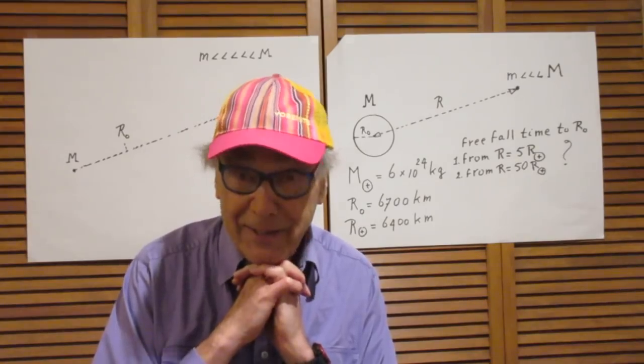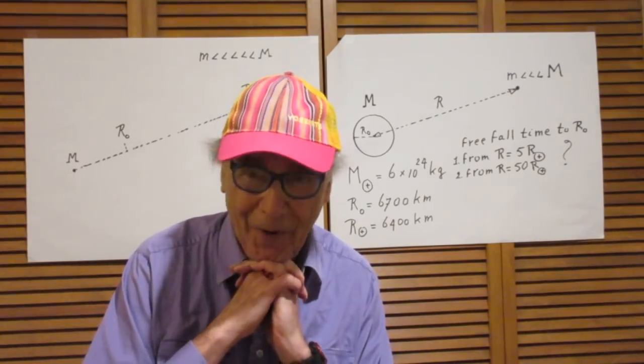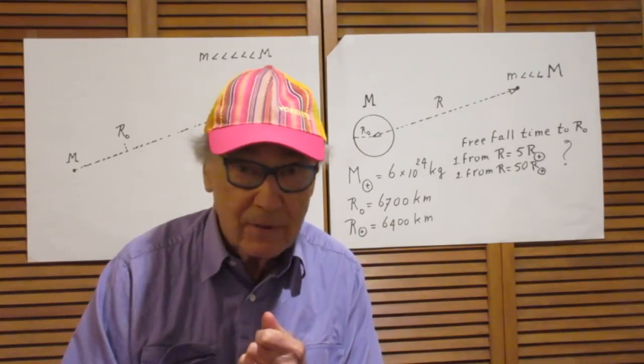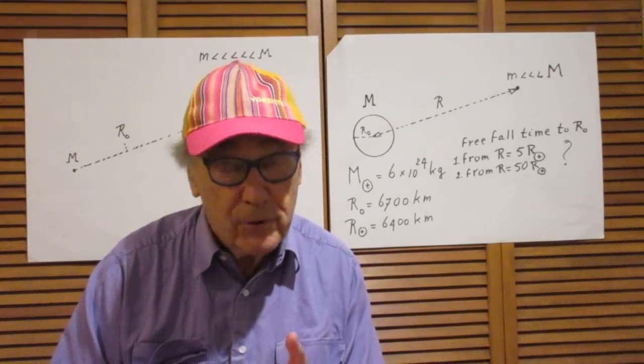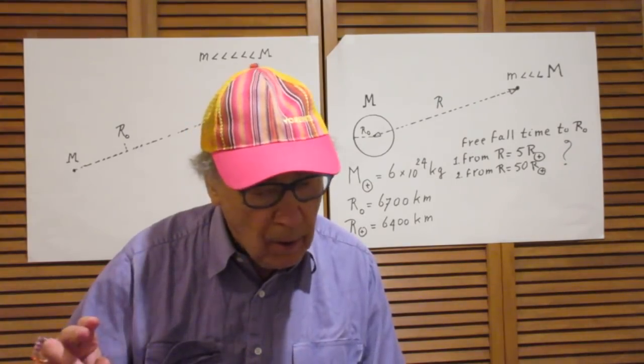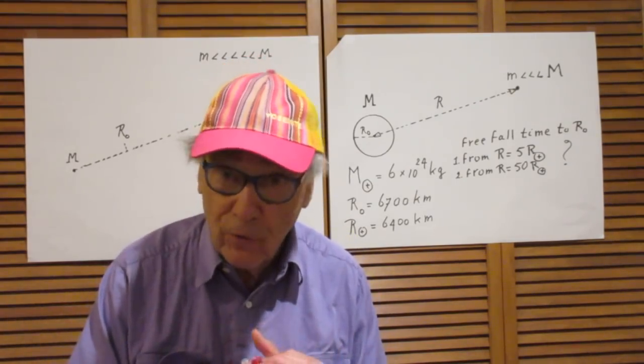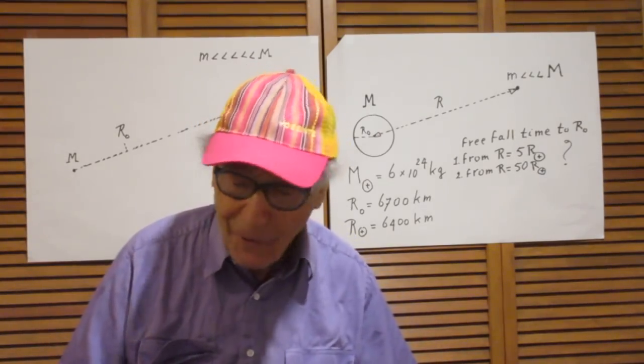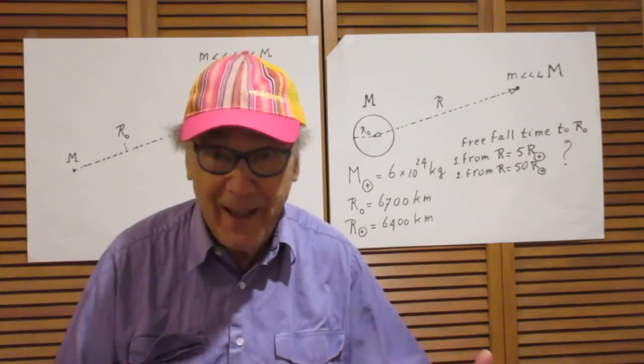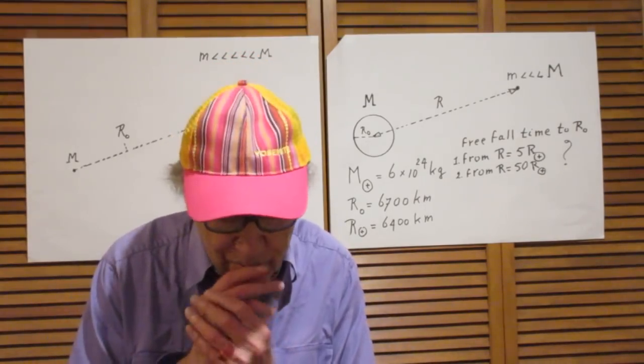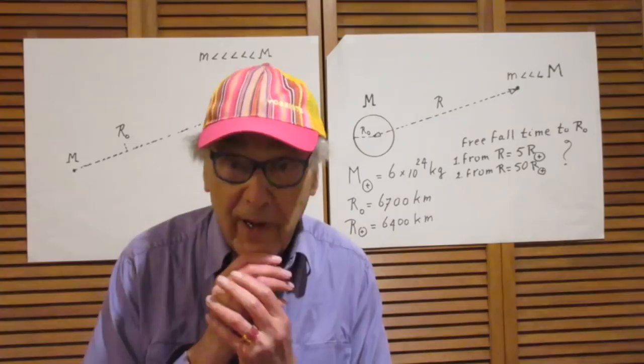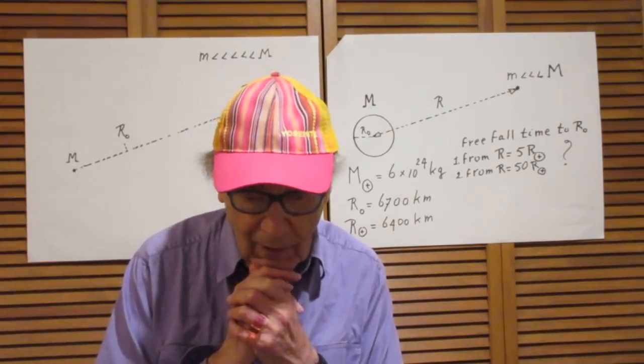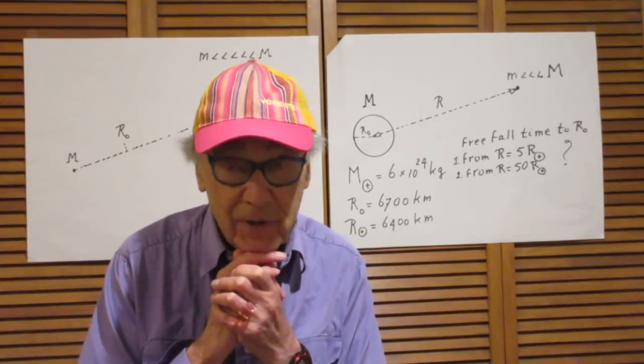In 1979, and I still have my notes from those days, I had a postdoc at MIT and two graduate students. And I wanted to know the free-fall time of something that fell onto a neutron star. So I had to do the calculation, including the integral. There was no internet yet that you could get the answer there. So I solved it and I asked these three people to do the same. And luckily we all found the same results.